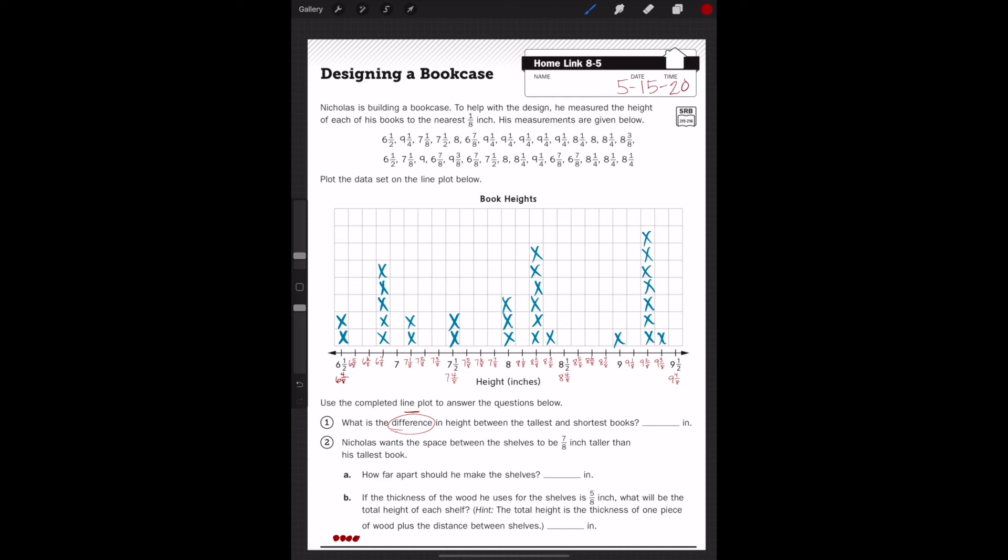And take a look at number 2, it says, Nicholas wants the space between the shelves to be 7/8 inch taller than his tallest book. So there are a few important words there. And letter A says, how far apart should he make the shelves? And letter B, read this one carefully because it gives you a hint. All right, boys and girls, I would like you to finish this after this video is over.